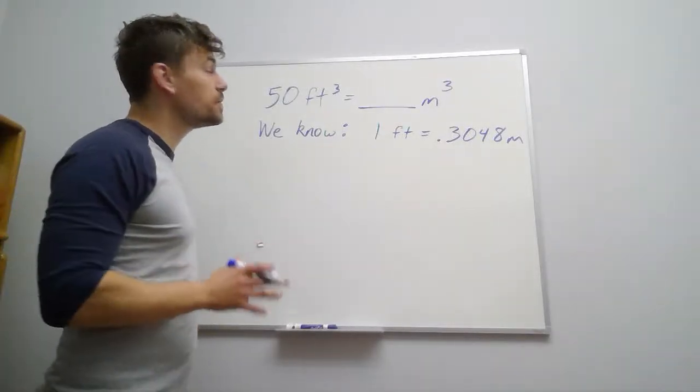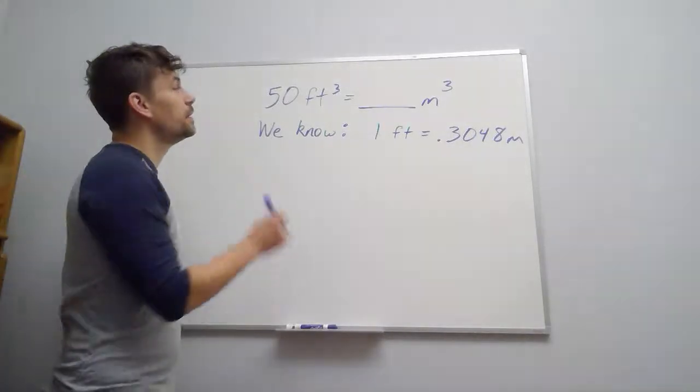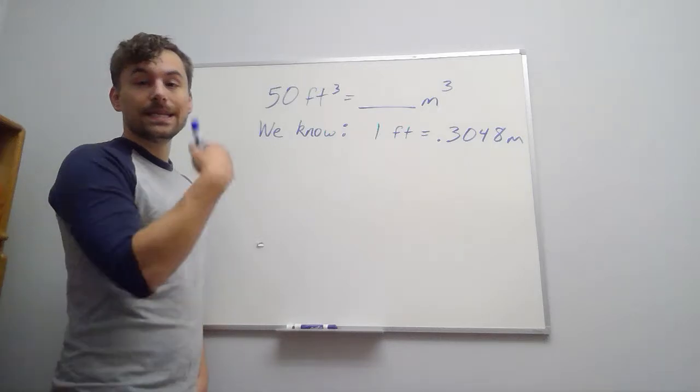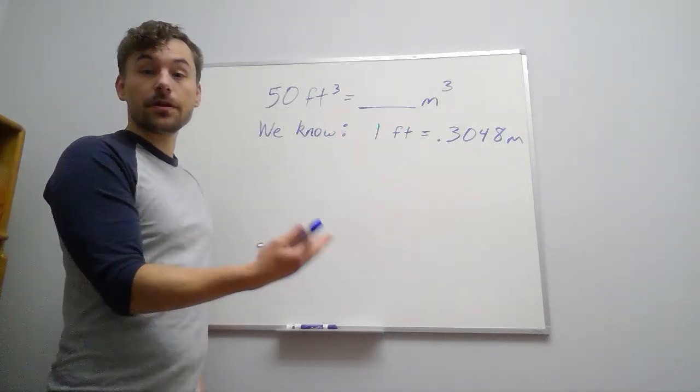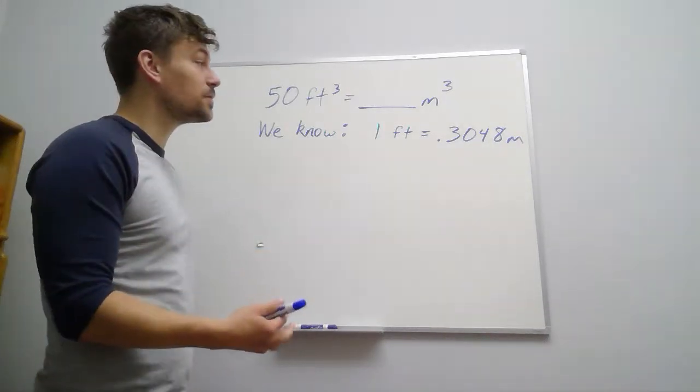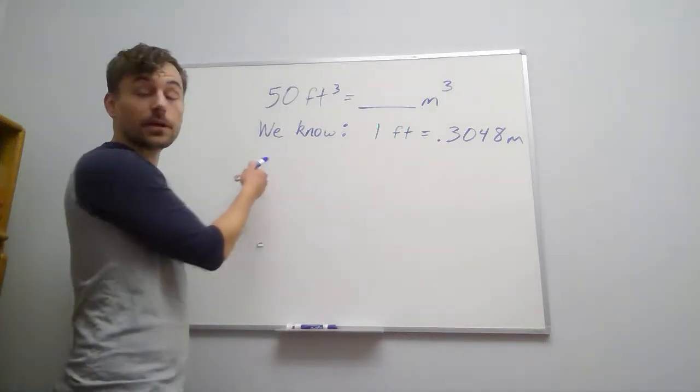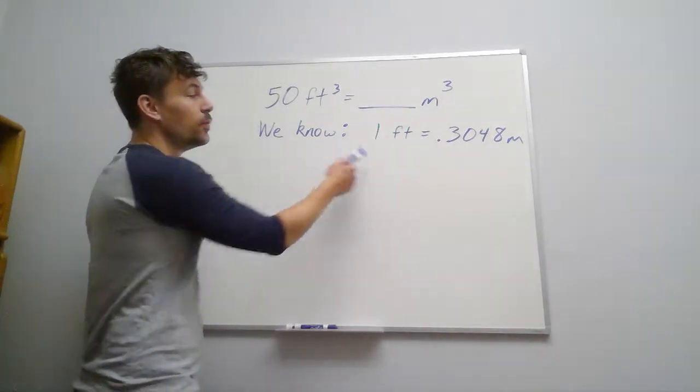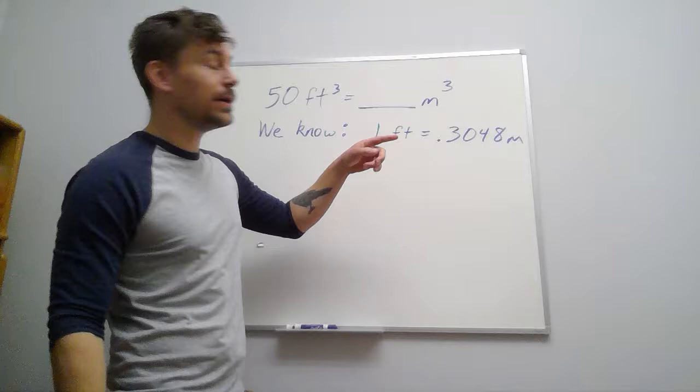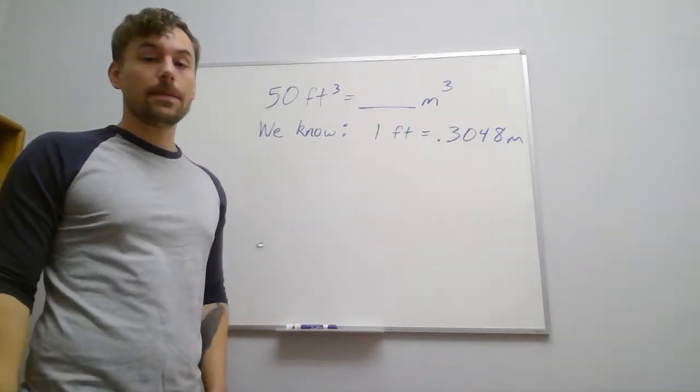So let's suppose that we're trying to convert 50 cubic feet into cubic meters, trying to figure out how many cubic meters we have. From our conversion chart, we know that one foot is the same as 0.3048 meters.